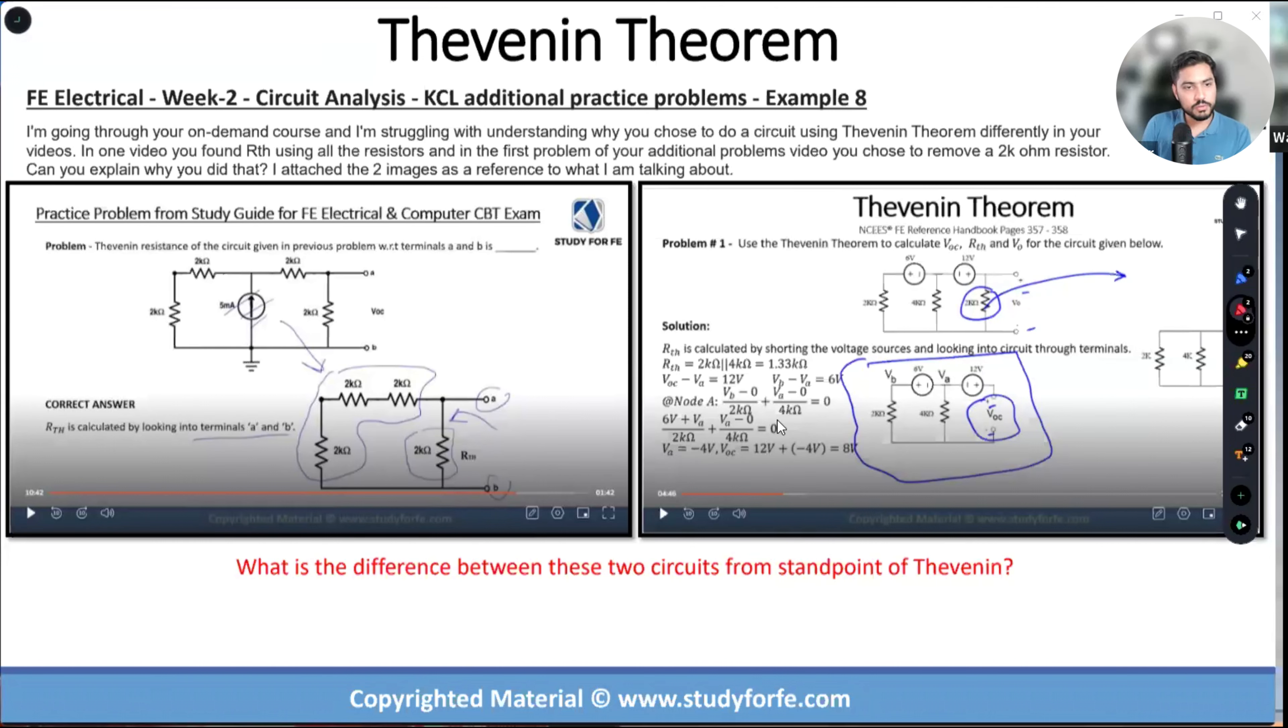The problem is dealing with Thevenin. I am going through your on-demand course and I'm struggling with understanding why you chose to do a circuit using Thevenin differently in your videos. In one video you found R Thevenin using all the resistors and in the first problem of your additional practice problems you chose to remove the 2k ohm resistor. Can you explain why you did that? I attached the two images as a reference to what I am talking about.